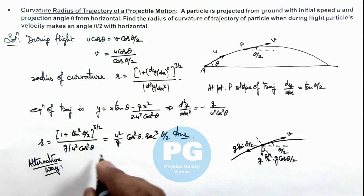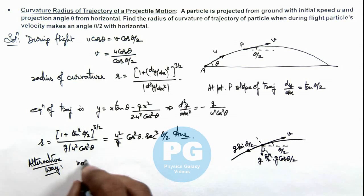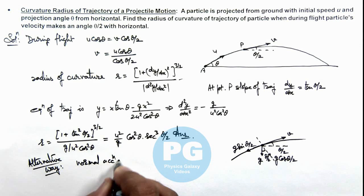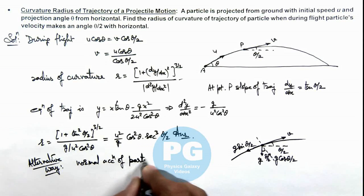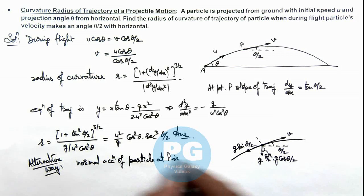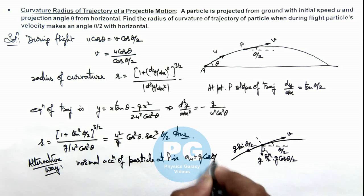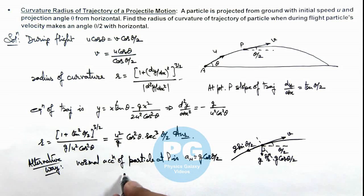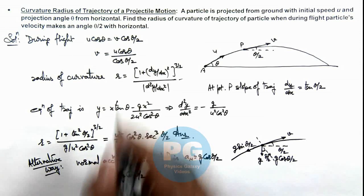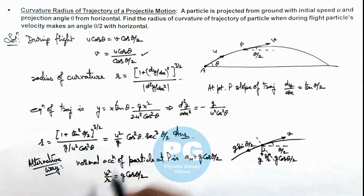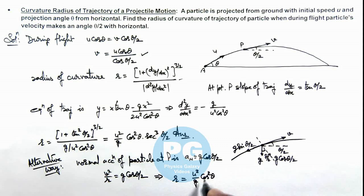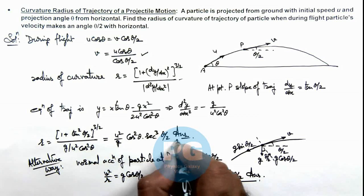So in this situation here we can see the normal acceleration of particle at P is a_n, we can write as g cos θ/2. In normal acceleration we can write as v²/r, so here v²/r is g cos θ/2. And the speed we already calculated here, so this can be substituted, and this will give us directly the radius of curvature which is u²/g cos² θ by cos³ θ/2, that is sec³ θ/2, which is the same result we are getting as we calculated here.